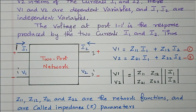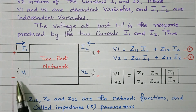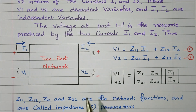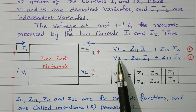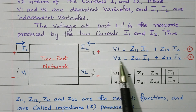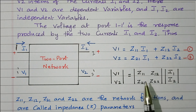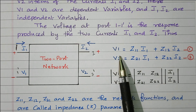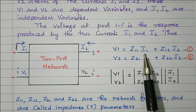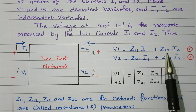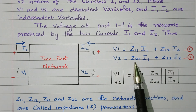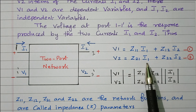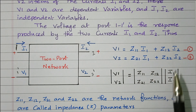The input port is termed as 1-1' and the output port is termed as 2-2'. We are going to express the voltage V1 and V2 in terms of current I1 and I2. V1 equals Z11·I1 plus Z12·I2. V2 equals Z21·I1 plus Z22·I2.